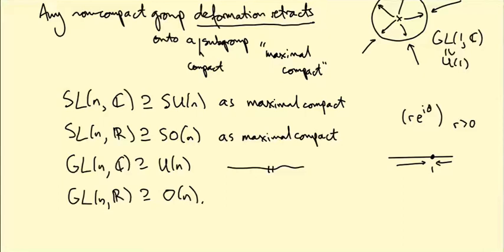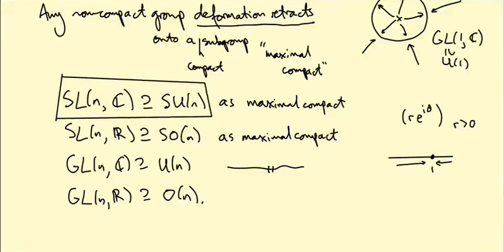So the take-home message is we have some examples of simply connected Lie groups to which we can apply these theorems, and the most important ones are SL(n, C) and SU(n).